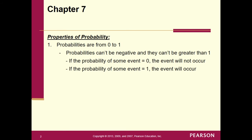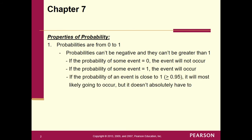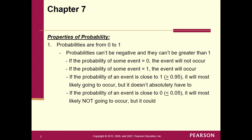If the probability of an event is close to 1 — say, greater than or equal to 0.95 — it will most likely occur, but it doesn't have to absolutely occur. If the probability is close to 0 — less than or equal to 0.05 — it will most likely not occur, but it could. We call this a rare event. For example, one particular lottery ticket having the winning numbers: probably not going to happen, but we know it does.